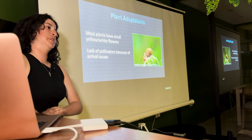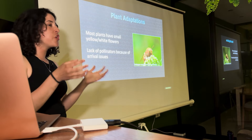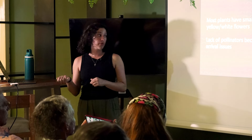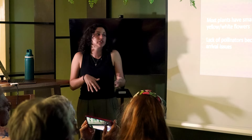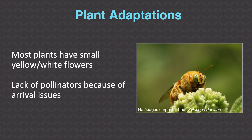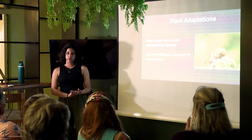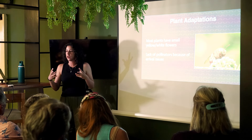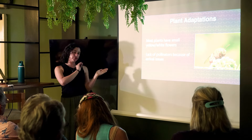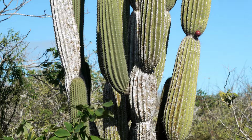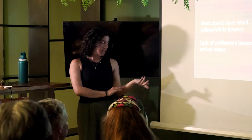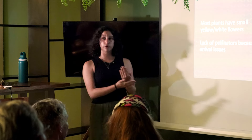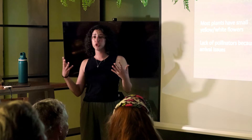Two plant adaptations are unique to the Galapagos. First, most plants have small white and yellow flowers due to a lack of pollinator arrival. The primary and only native pollinator is the Galapagos carpenter bee. When plants arrived to the Galapagos, there were no pollinators, so rather than expending energy on larger flowers to attract pollinators, plants put their energy towards other functions. Many plants here are self-pollinating or autogamous — able to pollinate their own flowers on the same plant or with another member of the same species. Plants that couldn't pollinate themselves didn't survive.